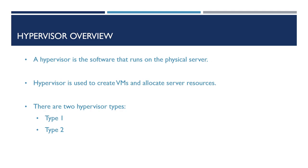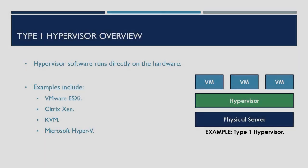There are two types of hypervisors available, which we'll take a look at now: type 1 and type 2. First of all, type 1 hypervisors. This is a hypervisor that runs directly on the hardware of the server. These include VMware ESXi, Citrix Xen, KVM, and Microsoft Hyper-V. An example of a type 1 hypervisor can be seen in the example on the screen.